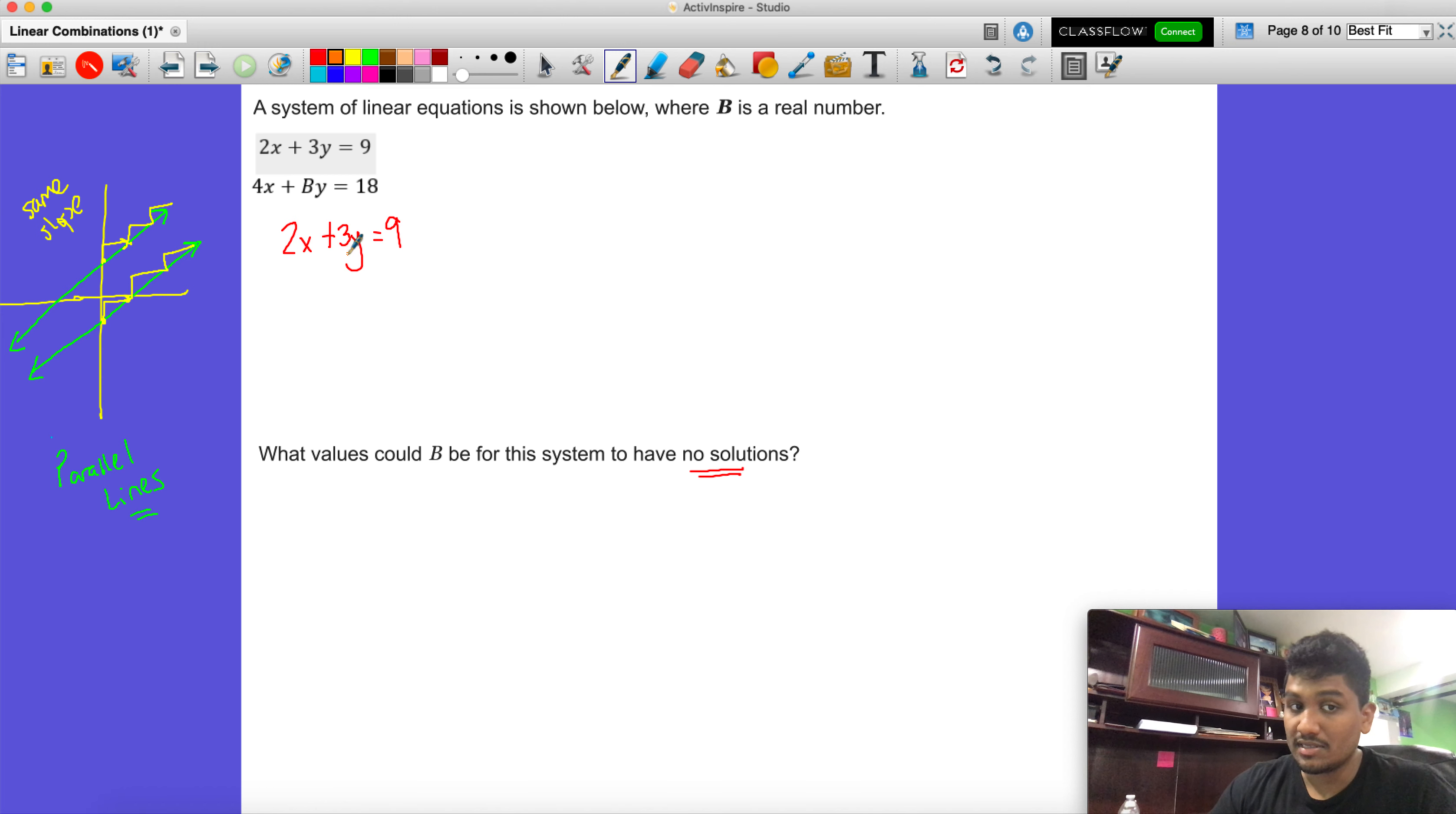To get this into y equals mx plus b form, we are going to keep the y by itself. So we're going to keep this piece right here, we are not moving. So then that means that if we want to keep this side here, we'll move the 2x over to the opposite side. Then these will cancel out. 2x's minus 2x's is no x's.